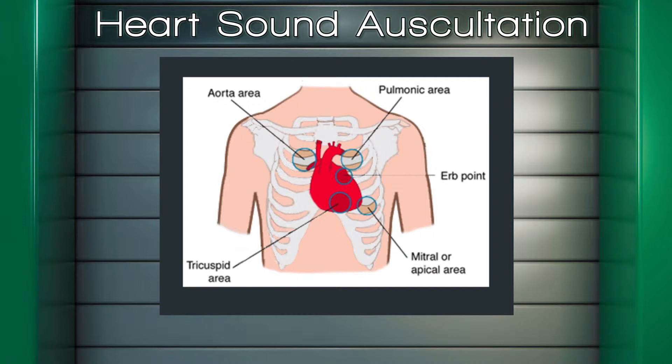Erb's point, third intercostal space on the left side of the sternal border. Tricuspid valve is at the fifth intercostal space near the sternal border. Tricuspid valve is at the fifth intercostal space in mid-clavicular.